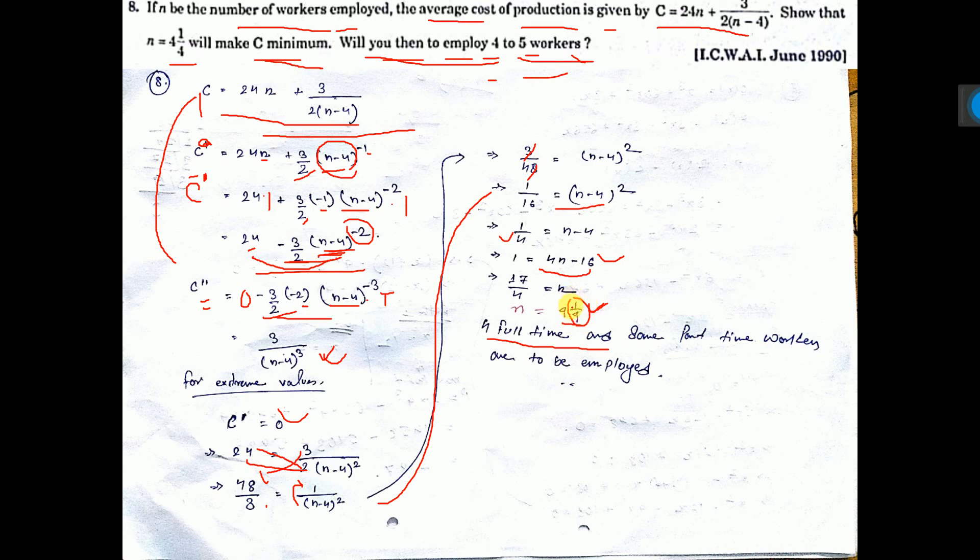If you employ 5 employees, then you have to pay extra money. So 4 full-time employees and 1 or more part-time workers are to be employed. This is the answer, that's all.